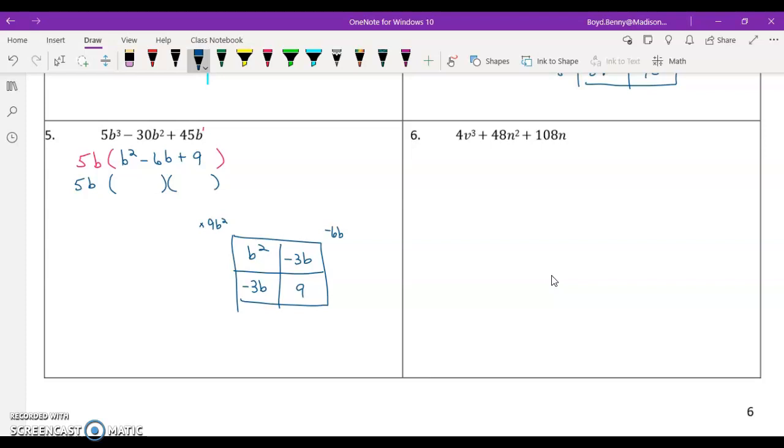What's the common factor on this bottom row? It's going to be a negative 3, and negative 3 times negative 3 is going to give me a positive 9. This would be b times b. We can check it real quick: b times b is b squared, b times negative 3 is negative 3b, and negative 3 times negative 3 is positive 9. So our two factors are b minus 3 and b minus 3, or 5b times b minus 3 quantity squared.